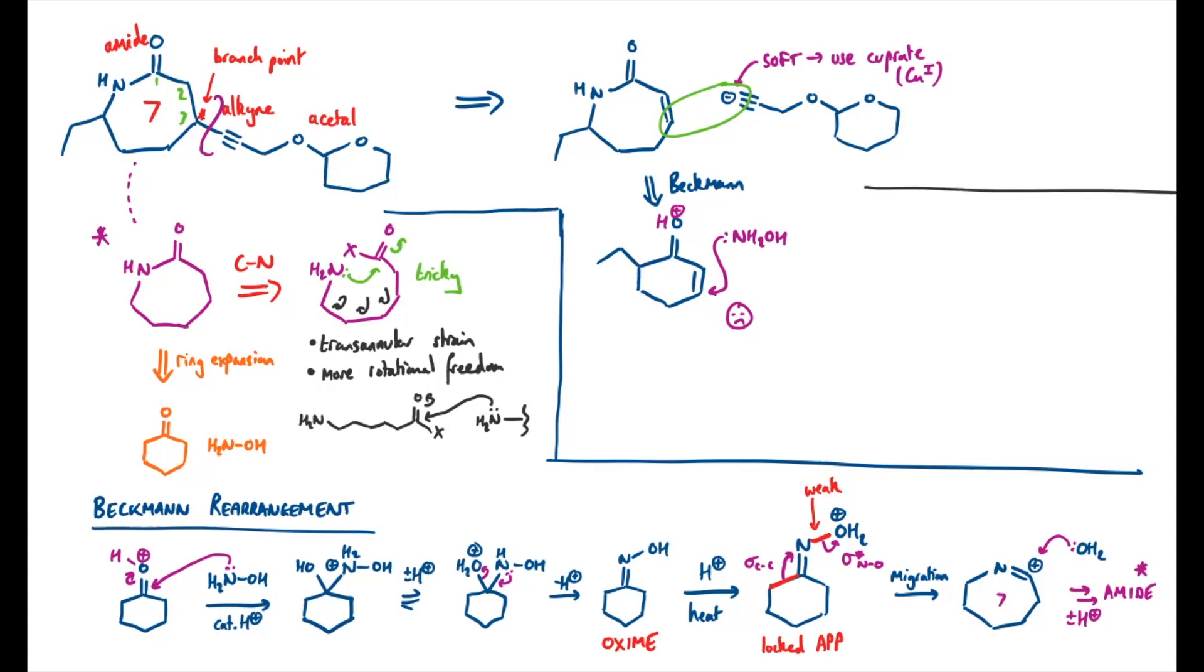So I'm going to revise my first disconnection to being the Beckman step first. So if my final step in the synthesis is going to be a Beckman rearrangement, I'm going to need this ketone with an ethyl group on the left hand side and the alkyne already on. So I'll move forward thinking about that molecule specifically.